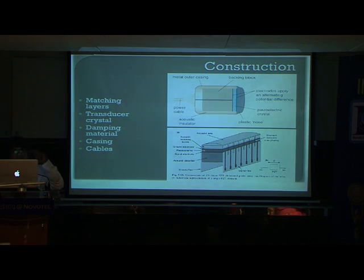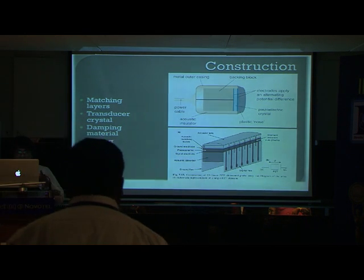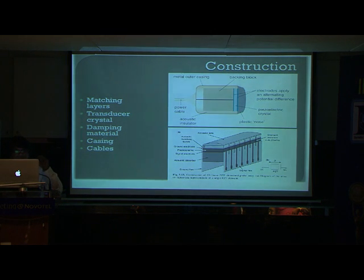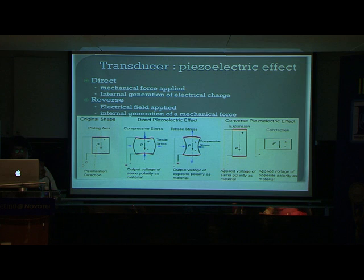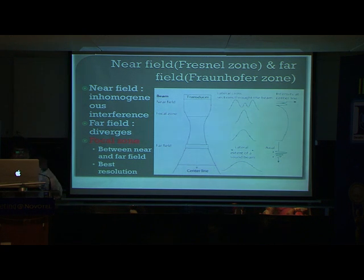The ultrasound probe construction contains first the acoustic lens at the front, then the piezoelectric crystals. Piezoelectric crystals are chemical crystals which reverberate when an alternating current is passed through them, producing a definite frequency of sound that passes inside the body. When current is passed through the piezoelectric crystal, it undergoes compressive and tensile stress, causing expansion and contraction. This mechanical expansion and contraction produces sound waves of a particular frequency.